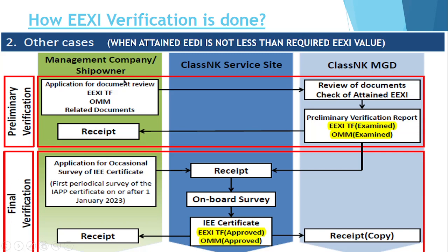In the preliminary verification, the management or supervisor company has to provide documents regarding the EXI technical file, the on-board management manual, and related documents for the method they are using. The class will review the documents, check the attained EXI after taking all the measures, and verify the EXI technical file and the on-board management manual. After that, you apply for IEE certification. The class will then go on board with the EXI technical file and on-board management manual, carry out the survey, and if everything is complying, they will approve it and issue the IEE certification.